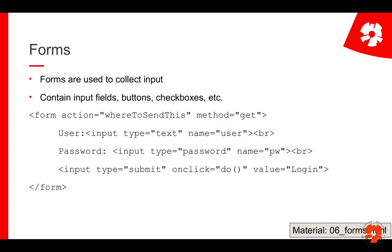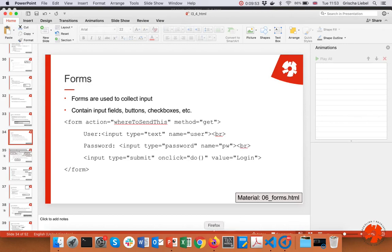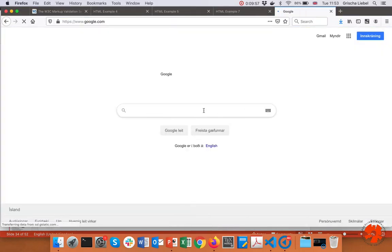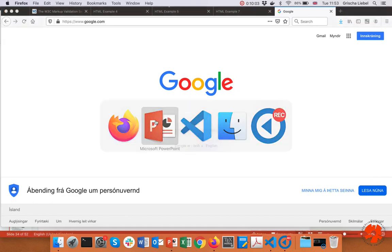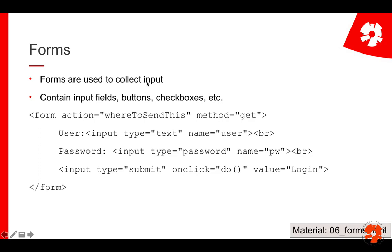As the last part in this series, we cover forms. Forms are what you see whenever you log in or use a contact form — they collect inputs. Typical elements include text fields, password fields, buttons, checkboxes, text areas, and so on. The form tag wraps everything: you start with form and end it, putting all elements in between. Here I have an input field of type text with a name attribute, which is important when you want to use the data.